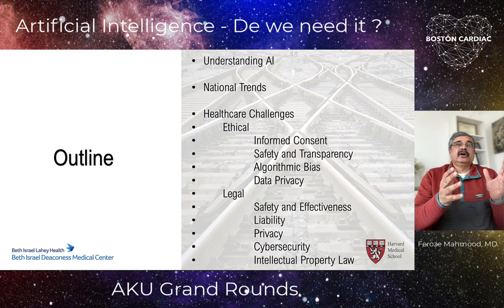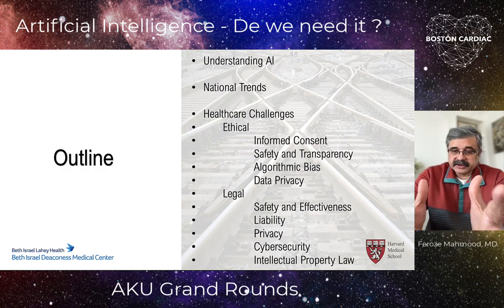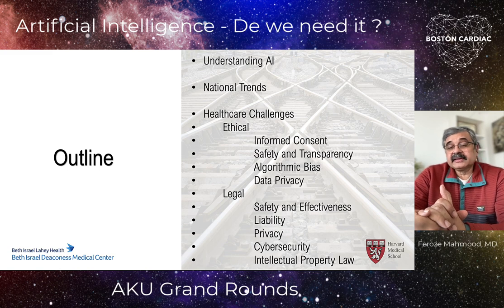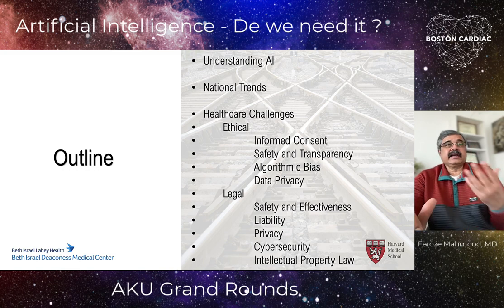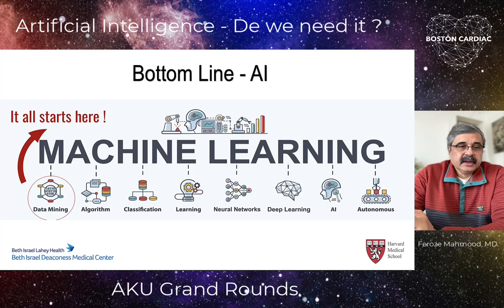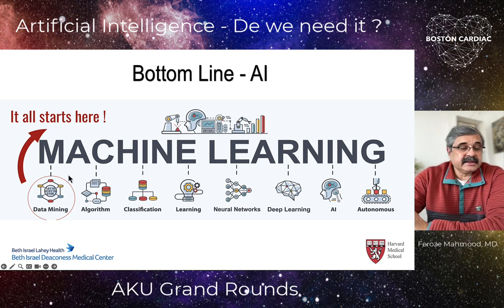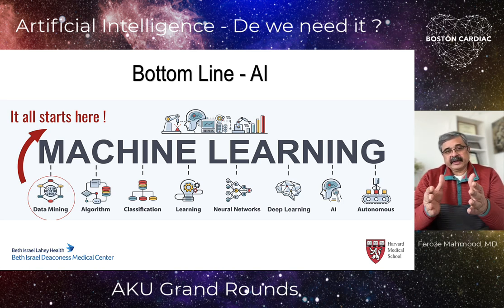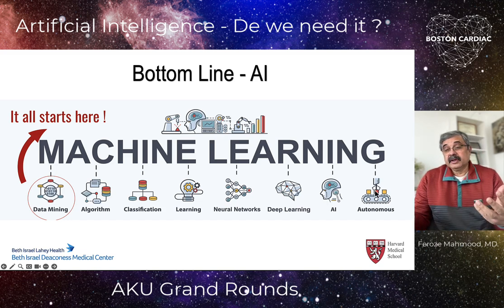I'll now focus the talk on artificial intelligence and common sense in medicine. The outline covers: understanding AI national trends, healthcare challenges — both ethical and legal — including informed consent, safety and transparency, algorithmic bias, and data privacy, followed by the legal aspects. The process leading to autonomous behavior begins with data mining, followed by developing algorithms, then classification, learning, neural networks, deep learning, artificial intelligence, and eventually autonomous behavior.